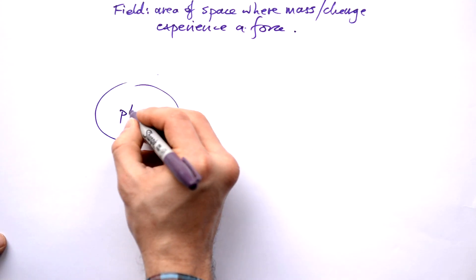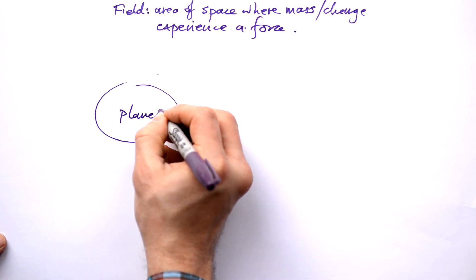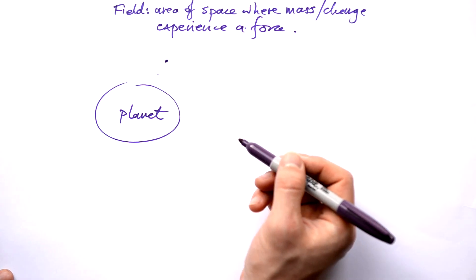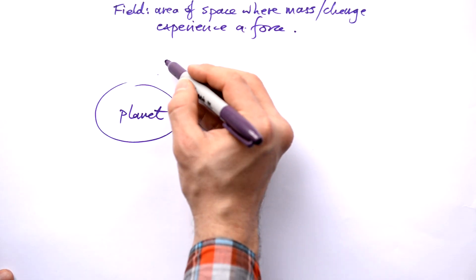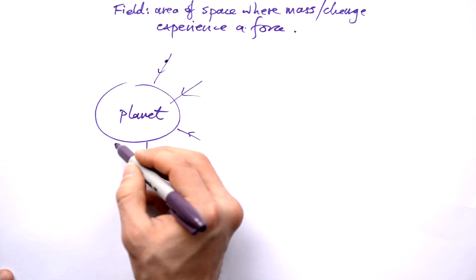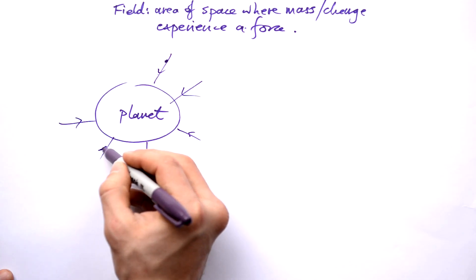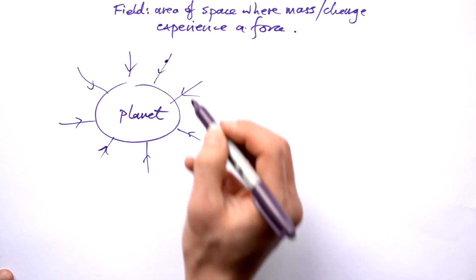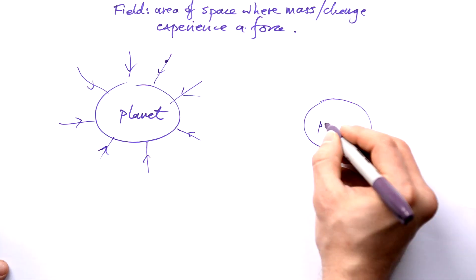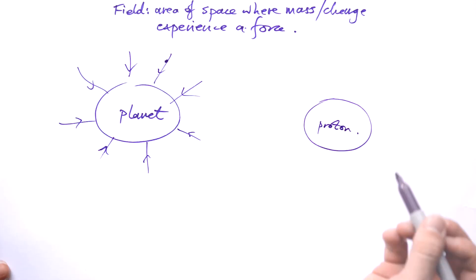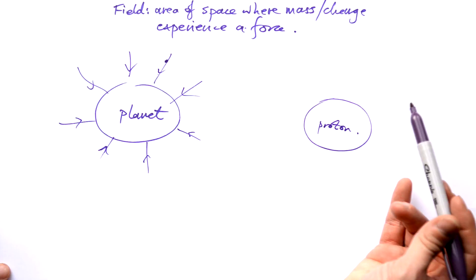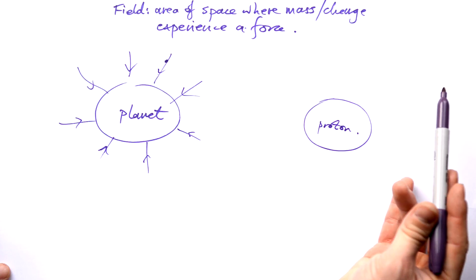Let's say I have a planet here. If I put a mass near the planet, which direction is the force going to pull? Of course it's going to be inwards, and it doesn't matter where I put it — the force is always directed towards the planet because gravity is always attractive. What about if I had a proton here? If I had an electron, it would be attracted; if I had another proton, it would be repelled.